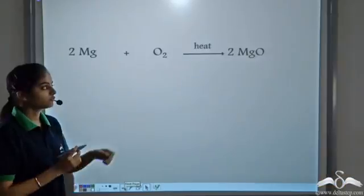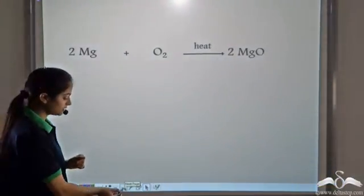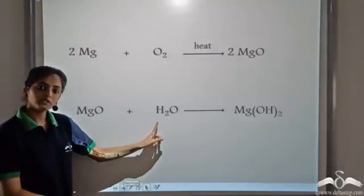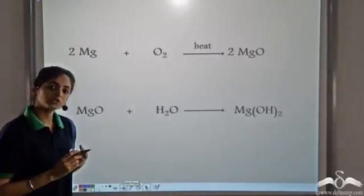Now let's see what happens when magnesium is burnt in the presence of oxygen. Magnesium ribbon is introduced into a jar containing oxygen. It burns with dazzling white flames. When magnesium reacts with oxygen, it forms magnesium oxide. This metallic oxide, on reaction with water, forms the corresponding hydroxide, which is magnesium hydroxide.